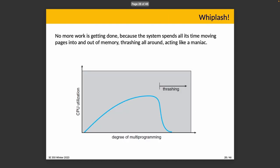No work is getting done now because the operating system is spending all its time moving pages into and out of memory — this is thrashing. The diagram illustrates the progression: starting more processes increases CPU utilization up to a point, but beyond that point it results in thrashing, where we are just moving stuff in and out of memory all the time and not actually getting useful work done.